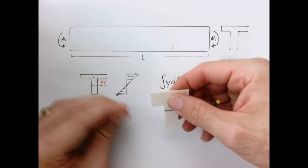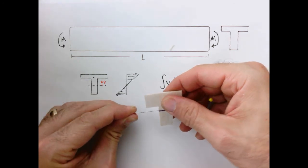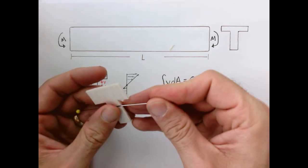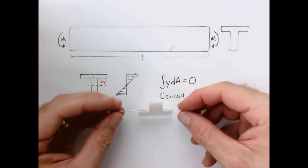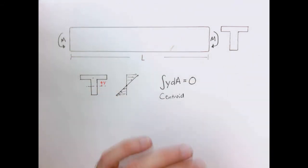Now, if I take the pins and I move them down to where this line is, and I hold it, then it really just wants to tilt that way. So the centroid is a special place and the centroid is where we always will find our neutral axis.